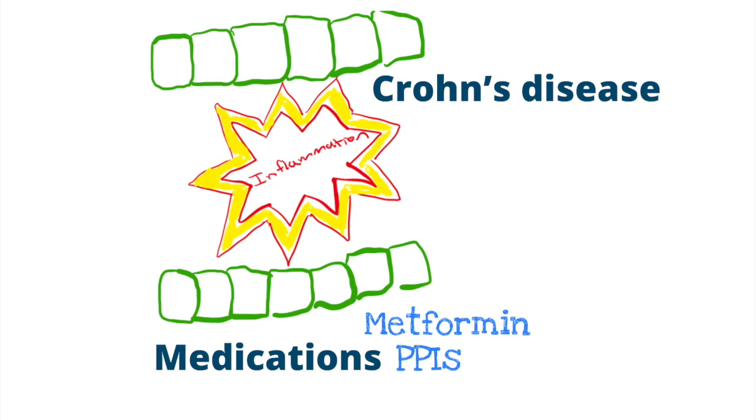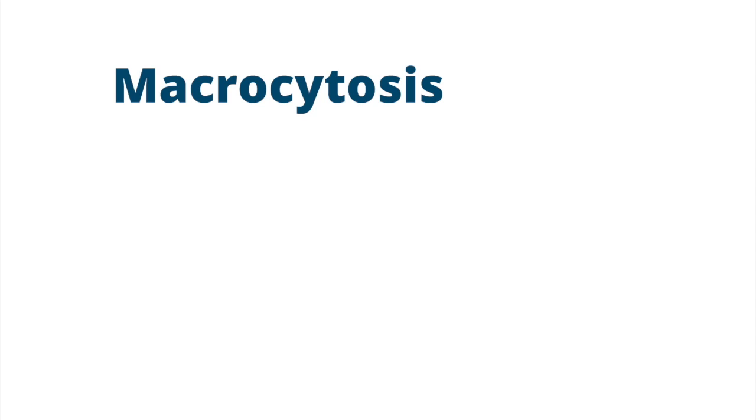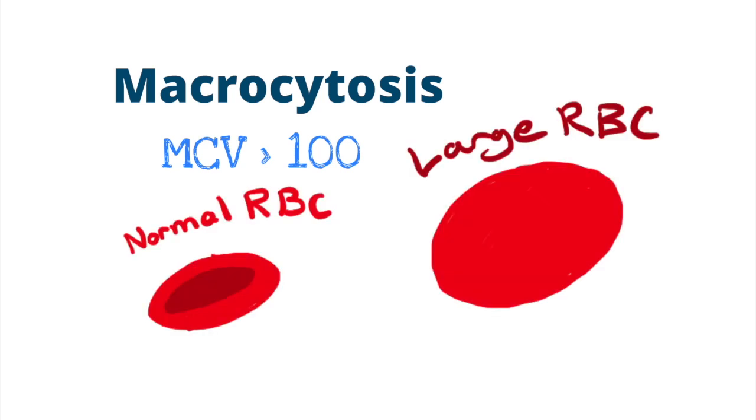Since the symptoms of B12 and folate deficiency can be difficult to identify, it is important to be able to diagnose the deficiency when suspected. Frequently, the first sign of B12 or folate deficiency is macrocytosis. During routine labs, if a CBC is obtained, there may be evidence of anemia or low hemoglobin. The MCV, or mean corpuscular volume, may be elevated. The MCV is a measure of the size of red blood cells. If the MCV is greater than 100, the RBCs are considered large, termed macrocytosis.